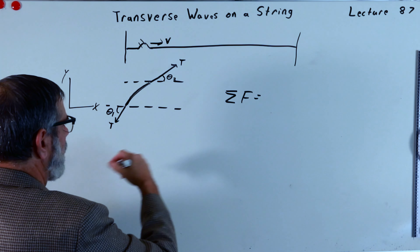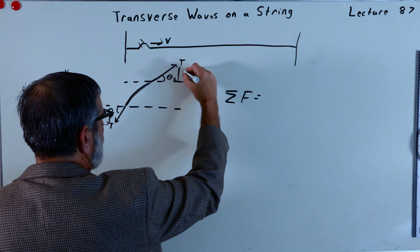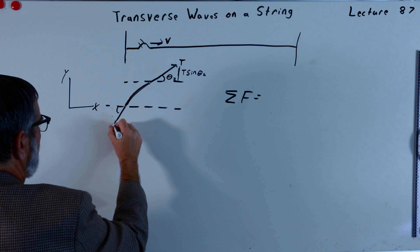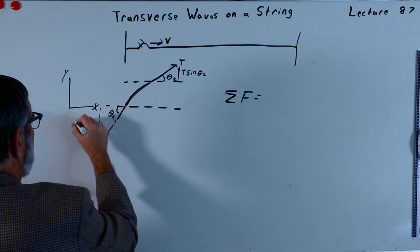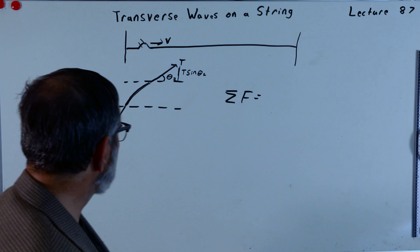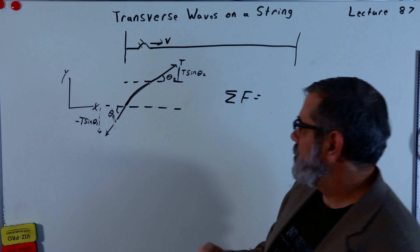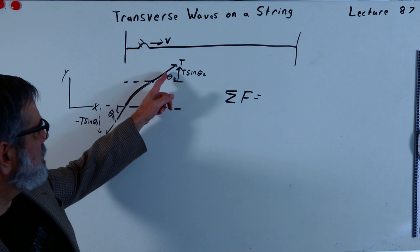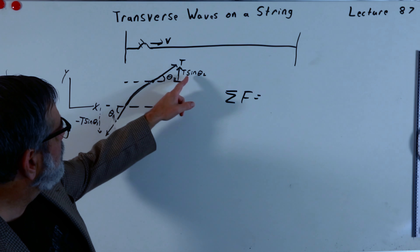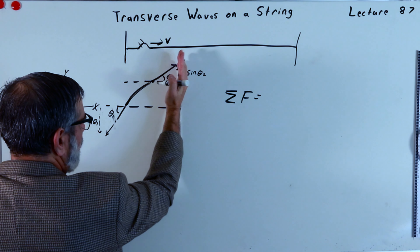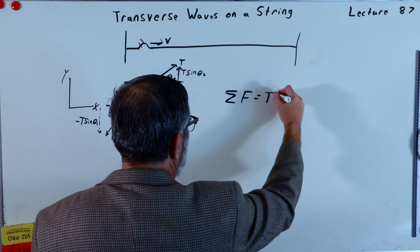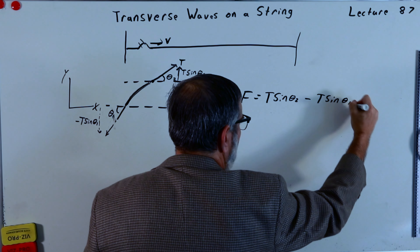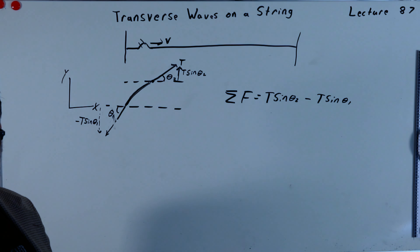So what are the sum of the forces? In the up and down direction, you can see there's a component of the tension times the sine of theta 2. And over here we have a force which is minus T sine of theta 1. From this point, it makes an angle with the horizontal of theta 2, and this little component in the upward direction is the tension in the line — which I'm assuming is the same throughout — times the sine of theta 2. So the sum of the forces is T times the sine of theta 2, minus T sine of theta 1, because it's going in the opposite direction.